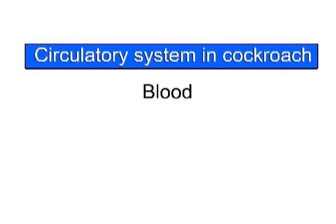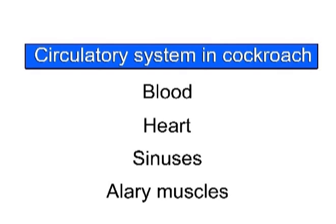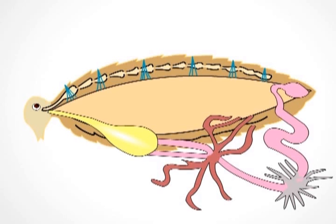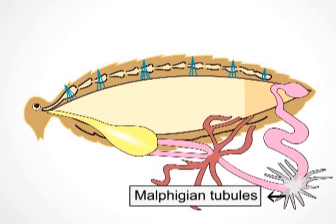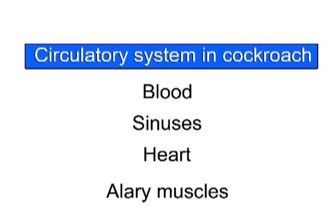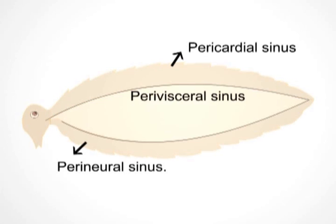The circulatory system in cockroach consists of blood, heart, sinuses, and Ellery muscles. Blood is white in color due to the absence of respiratory pigment hemoglobin, so it does not help in the transport of respiratory gases. However, it transports all nutrients to all organs of the body and collects waste material from organs, supplying it to the excretory organs called Malpighian tubules.